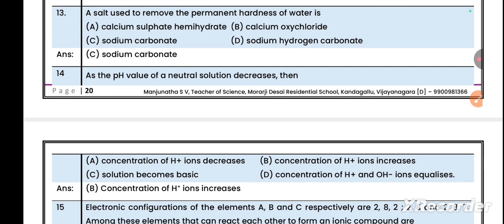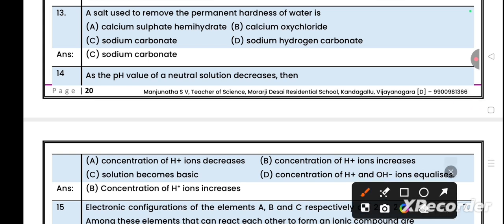Question 13: A salt used to remove the permanent hardness of water is calcium sulphate hemihydrate, calcium oxychloride, sodium carbonate, or sodium hydrogen carbonate. The right answer is sodium carbonate because sodium carbonate is used in detergents and soap powders.